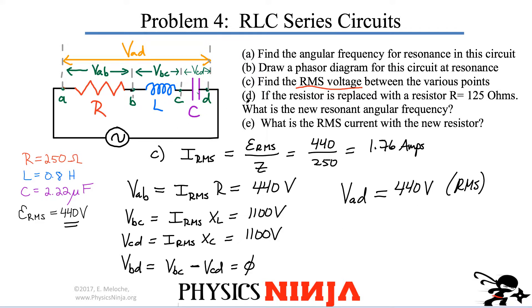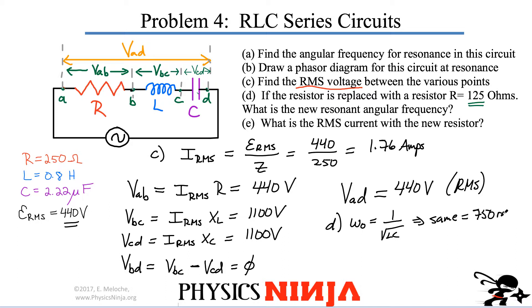Part D says: what if the resistor is replaced with a smaller value of 125 ohms? What is the new resonance frequency? Well, omega-zero equals 1 over square root of LC — this is the same. We still have 750 radians per second. Changing the resistance does not change the resonance condition of the circuit. That's an important point.